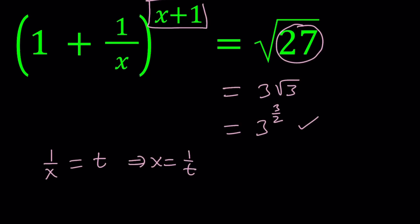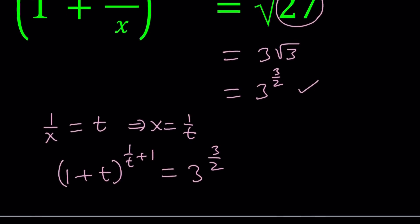And then from here we're going to get x equals 1 over t. And we're going to get 1 plus t to the power t plus 1 equals 3 to the power 3 halves. The right hand side stays the same. The left hand side is written now in terms of t, which is a little better because now the base kind of looks like a polynomial instead of a rational function.